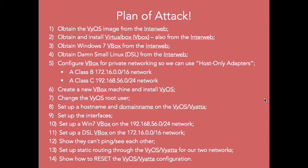We're going to configure VirtualBox for private networking so that we can use host-only adapters. I'm going to configure one Class B address on a private 172.16 network and one private Class C address on a 192.168 network. Then we're going to create a new VirtualBox machine and install VyOS. We're going to change the root user, set up a hostname, set up a domain name, and set up the interfaces. Then we'll go back and boot our Windows 7 VirtualBox and our Damn Small Linux VirtualBox, each on a different network.